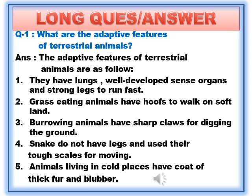Number 2: Grass-eating animals have hooves to walk on soft land. Number 3: Burrowing animals have sharp claws for digging the ground. Number 4: Snakes do not have legs and use their tough scales for moving. Number 5: Animals living in cold places have a coat of thick fur and blubber.